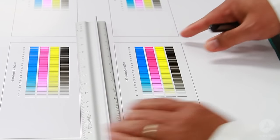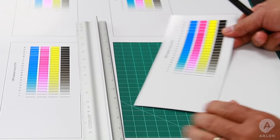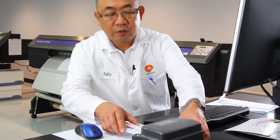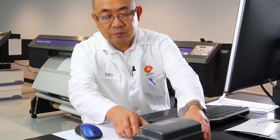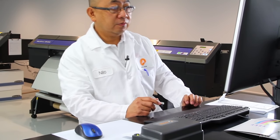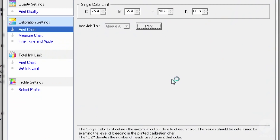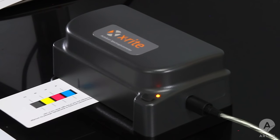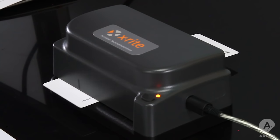Click print to print the test chart. Before we can use the instrument, the instrument needs to be calibrated. What I'm doing now is the calibration process for the X-Rite instrument. Calibrate your measurement instrument.